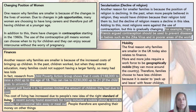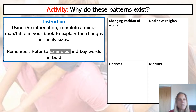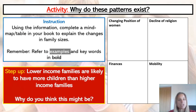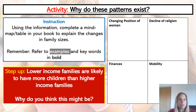Do the other three sections as well as the changing position of women one. Then consider the final question: lower income families are likely to have more children than higher income families — why do you think that might be? Jot down reasons why, thinking about job choices, the role of women, and the financial implications. Thank you for listening today.